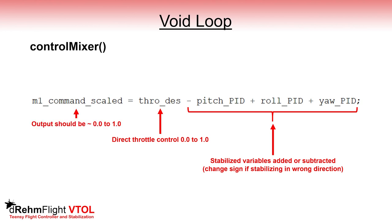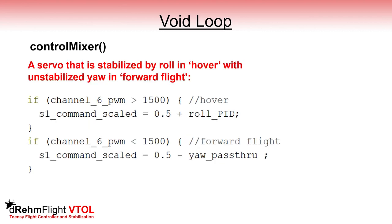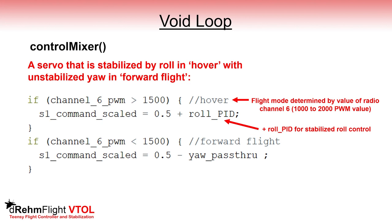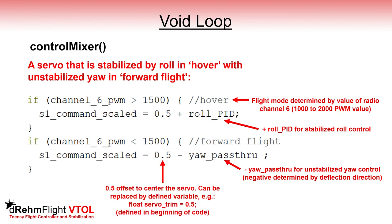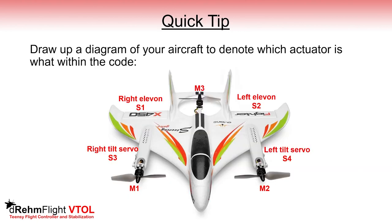With this assignment, the M1 command scaled variable should correctly have a value between 0 and 1, which is very important. Here we'll consider a servo in the control mixer that has different assignments for different flight modes. The flight mode in this example is determined by the value of the channel 6 PWM variable, which will have a value anywhere between 1000 and 2000. For our hover configuration, this servo should be stabilized based on roll movement with the roll PID variable. In forward flight, it uses the unstabilized yaw pass-through variable. Note that the sign can change depending on the desired deflection direction, and we've added an offset of 0.5 to center the servo — this is not needed for motors. Draw up a diagram of your aircraft to denote which actuator is what within the code, to help make mixing assignments and troubleshoot if an actuator is moving in the wrong direction.